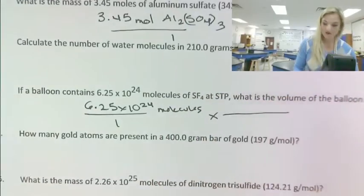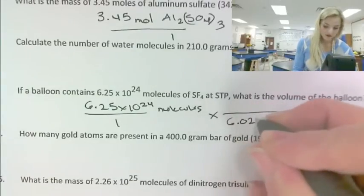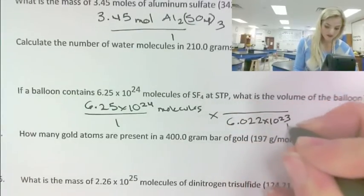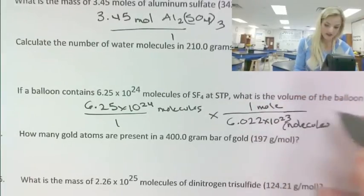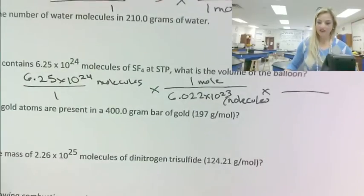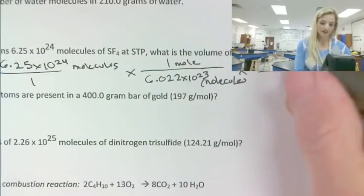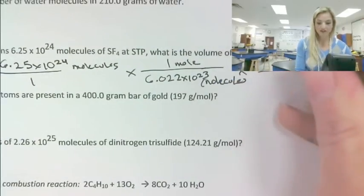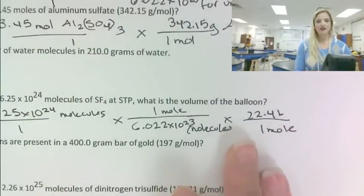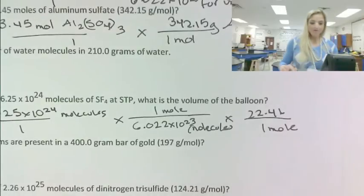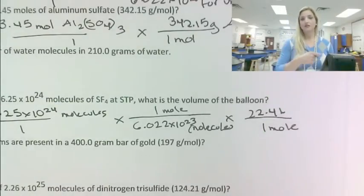And then we're going to go to moles, because that's the next step. If we look at our palm, 6.022 times 10 to the 23rd molecules is one mole. And then we see now that we're going to need to go to liters. So liters will be on the top of the next fraction. We have 22.4 liters at STP is one mole. And I'm abbreviating a little bit by not putting my formula each time, so forgive me.